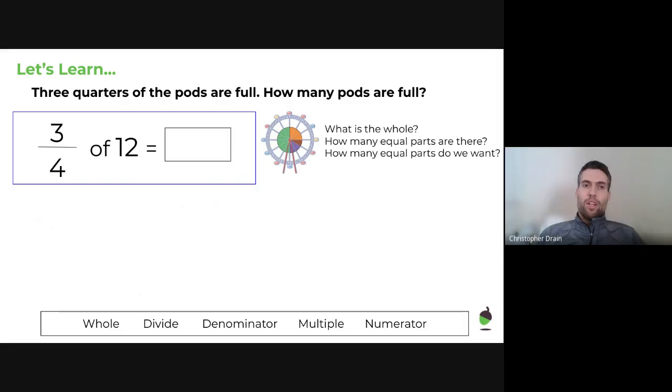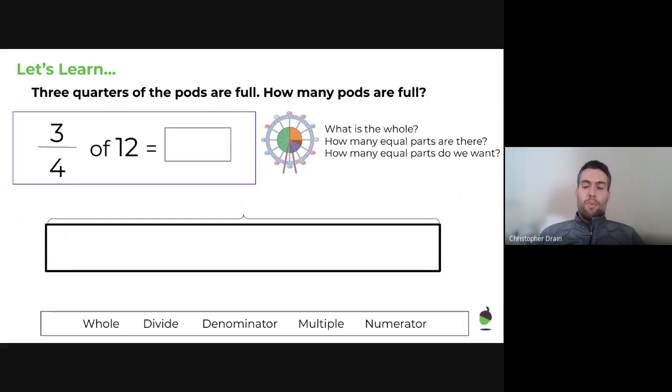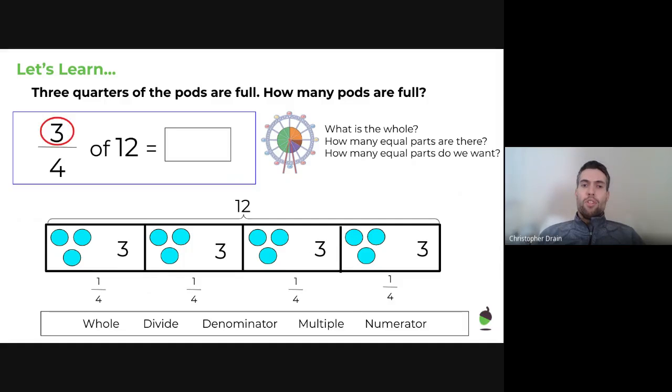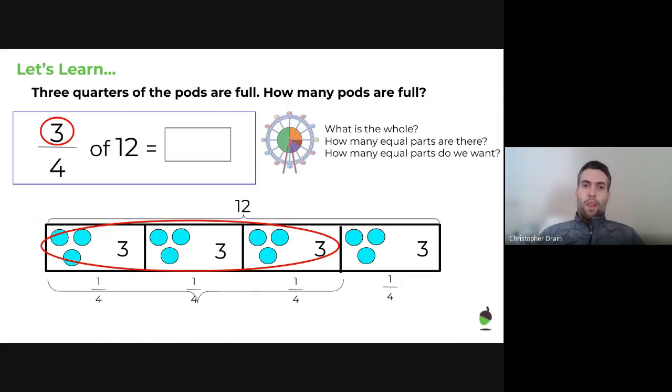Now, a little bit trickier. Three quarters of 12 this time. Three quarters of the pods are full. How many of the pods are full? So, again, we would start off by drawing our bar. It represents the 12 pods altogether. We split it into four equal pieces, distribute the 12 just in the same way as we did before. Each has got three in it. Now, this time, though, we want three of those quarters, so we would want these ones here. And we could then say, well, that's going to be either three times three or you could just do three plus three plus three. Either way, our answer is going to come to nine.